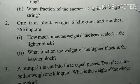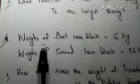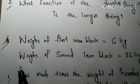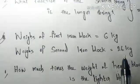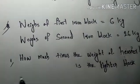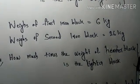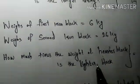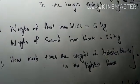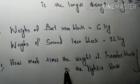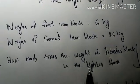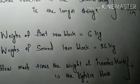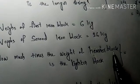Now let's do the same method. Weight of the first iron block is 6 kg. Weight of the second iron block is 26 kg. How many times the weight of the heavier block is the lighter block? This is the heavier block and this is the lighter block.